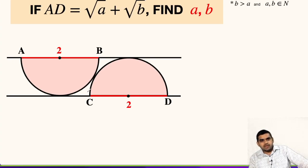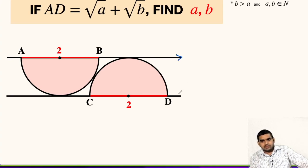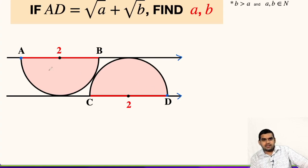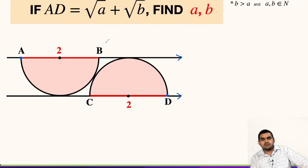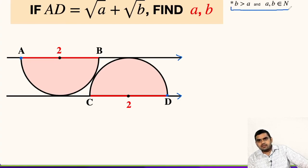Here in the figure, two identical semicircles are given whose diameters are two units each. There are two lines parallel to each other. This point is A and this point is D. If we connect them, then its measure is given as root A plus root B. We have to find the value of A and B. We are also given that B is greater than A and they belong to natural numbers.